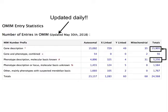Here are some statistics about OMIM as of Thursday, May 30th, 2018: there are 15,905 gene descriptions in OMIM, and there are 5,256 phenotypic descriptions for which the molecular basis is known. There are also 1,584 phenotype descriptions or loci — genes on chromosomes or areas on the chromosome — for which the molecular basis is unknown.